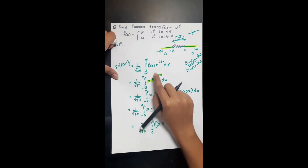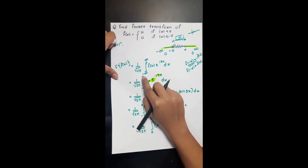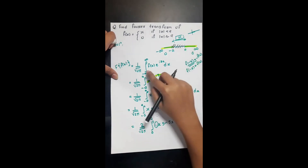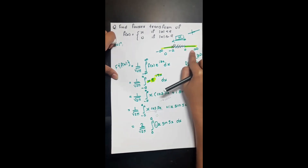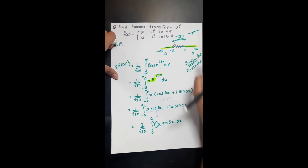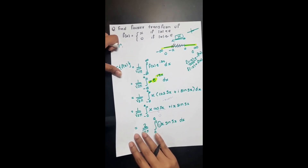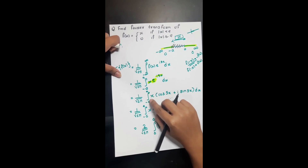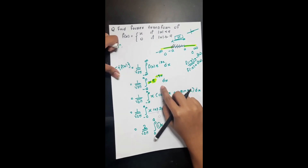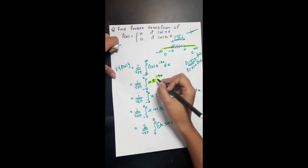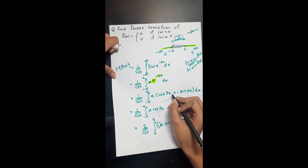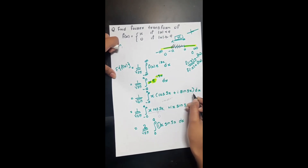Substituting the value of f(x) — we only integrate over the region minus a to a, since the rest is already zero. We note that e^(isx) equals cos(sx) + i·sin(sx).